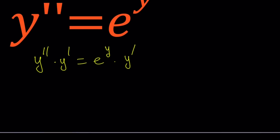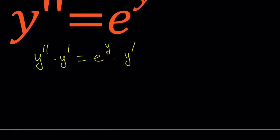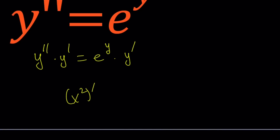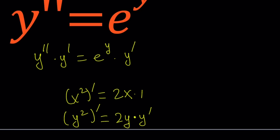So y double prime times y prime equals e to the power y times y prime. Now here's what I want you to notice. If you take the derivative of x squared, you'll get 2x times the derivative of x, which is just 1. Now what happens if you take the derivative of y squared? You get 2y, but then you have to multiply by the derivative of the inside, which is y prime — because y is a function of x, we also have to consider the chain rule.